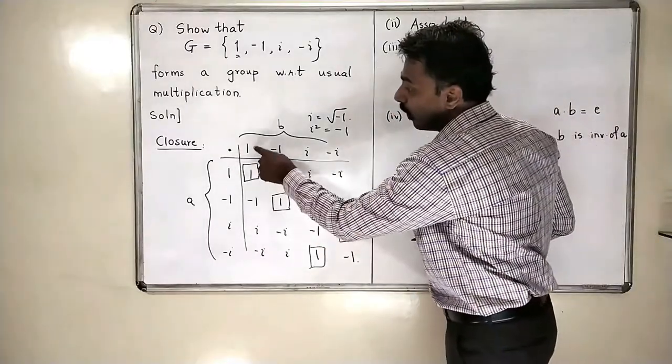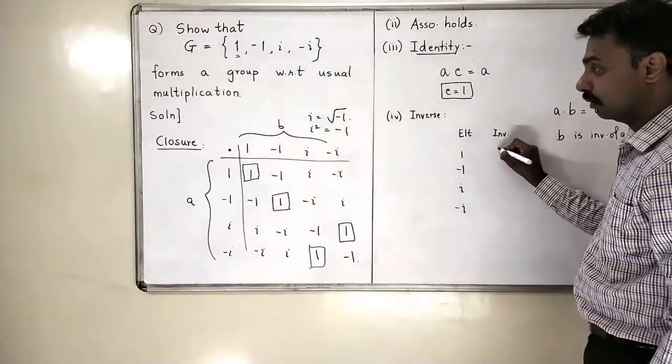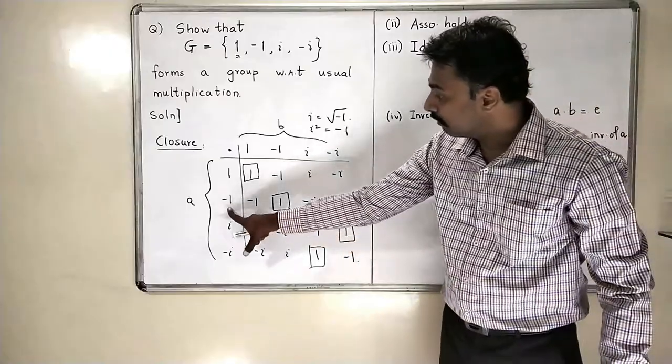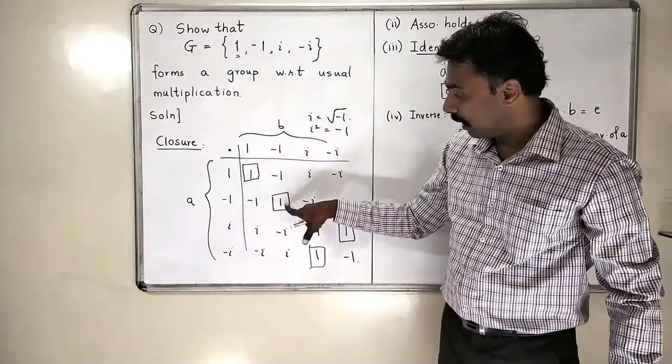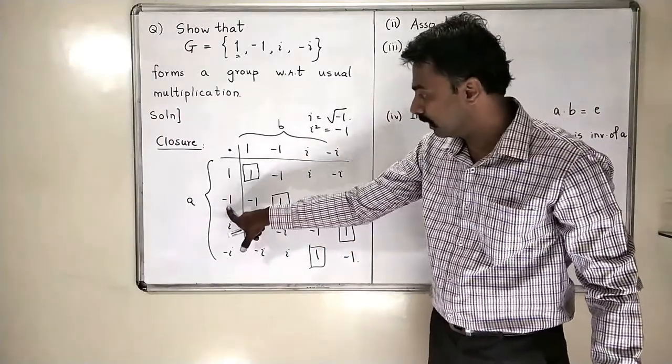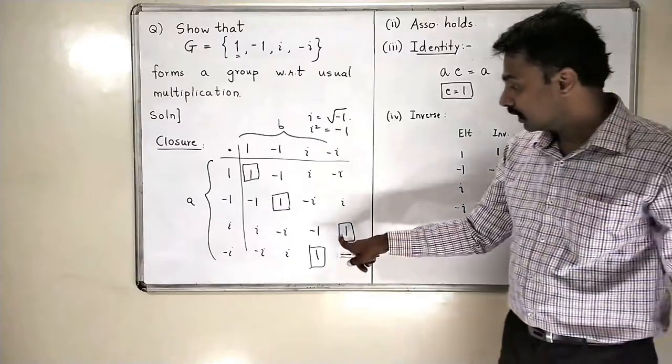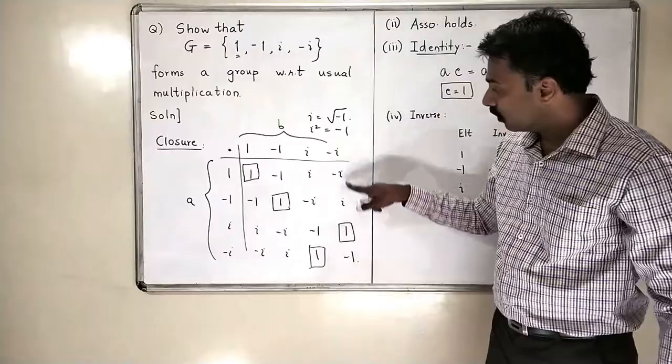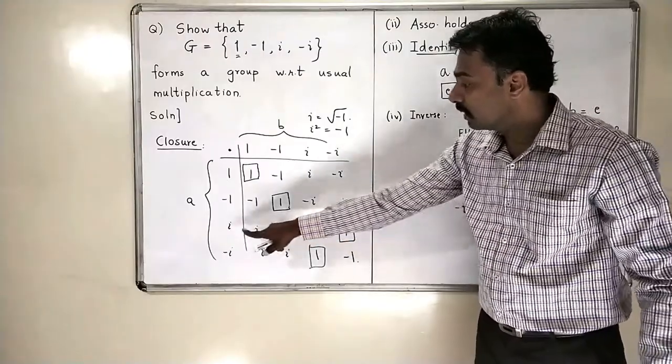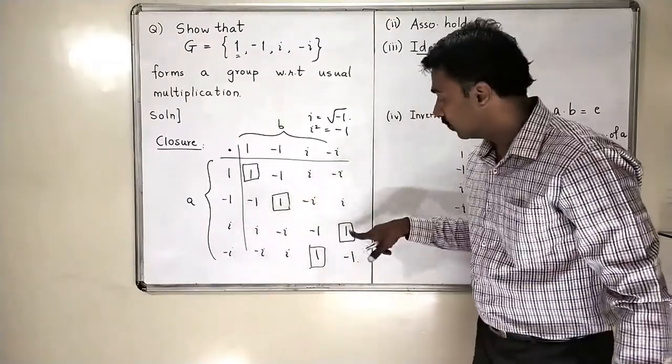1 into 1 is 1. So the inverse of 1 is 1. This says that minus 1 into minus 1 is 1. So inverse of minus 1 is minus 1.